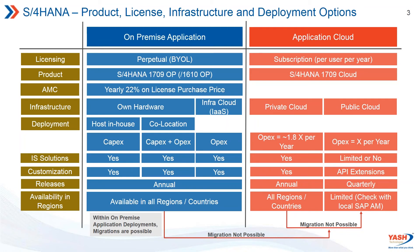Coming to private cloud: also completely provided by SAP, but you have your own private tenant. The per-year subscription charges are higher — roughly 80 percent more, or approximately 1.8x compared to public cloud, potentially even double depending on the market. Private cloud has complete support for all industry solutions, full customizations on the tenant, annual releases like on-premise, and is available in all regions and countries.